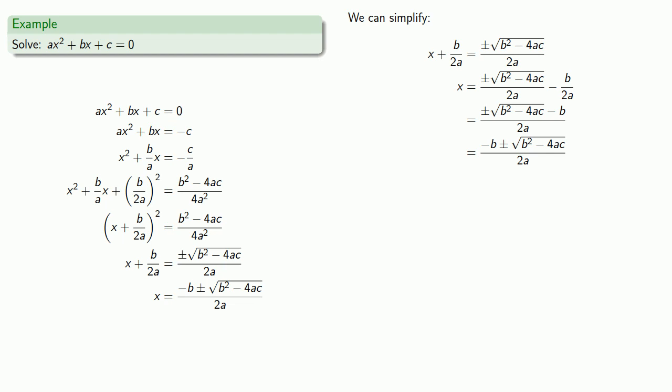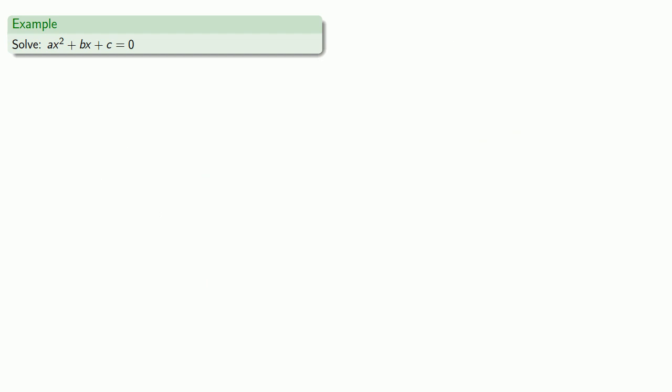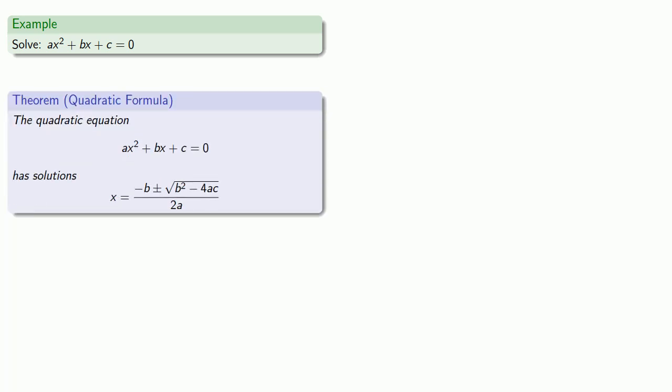So we get our solution to this generic equation: x equals negative b plus or minus the square root of b squared minus 4ac, the whole thing over 2a. As a general rule it's not worth memorizing formulas in mathematics — it is far more important to understand and apply concepts. There are about three exceptions to that rule, and the quadratic formula is one of them. If we want to solve ax squared plus bx plus c equals zero, the quadratic formula gives x equals negative b plus or minus the square root of b squared minus 4ac, all over 2a.